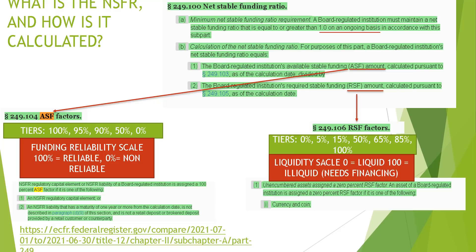The Net Stable Funding Ratio is a weighted rating that must be achieved at 1.0 on an ongoing basis. Calculation is determined by two things: the ASF amount and the RSF amount. The ASF factor is basically a reliability scale for funding — the higher the percentage, the more reliable the funding source. There are different tiers making up the ASF factors. To meet the 100% ASF factor, it must be an NSFR regulatory capital element or an NSFR liability with a maturity of one year or more from the calculation date, not described in paragraph D9, and not a retail or brokered deposit.